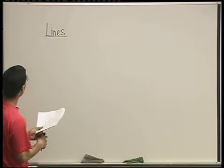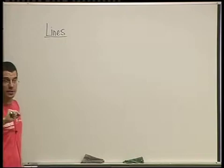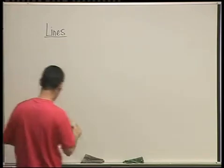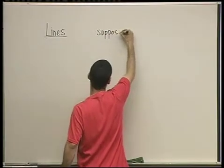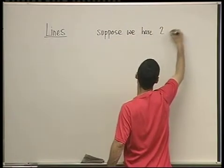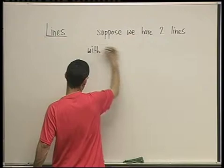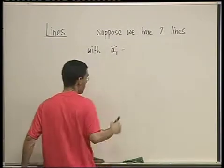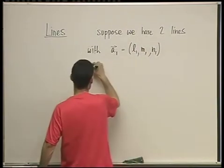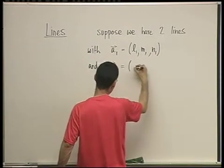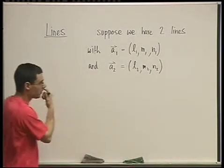There's going to be a surprising guest appearance in this discussion. For identifying this skew business is going to be kind of neat. So suppose we have two lines with direction vectors. Let's call the first A1 with components L1, M1, and N1. And the direction vector of the second one A2 with components L2, M2, and N2.